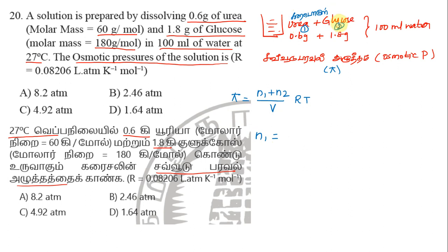As per solution, N1 is 0.6 gram divided by molar mass 60, which equals 0.01. N2 is 1.8 gram divided by 180, which is 0.01.